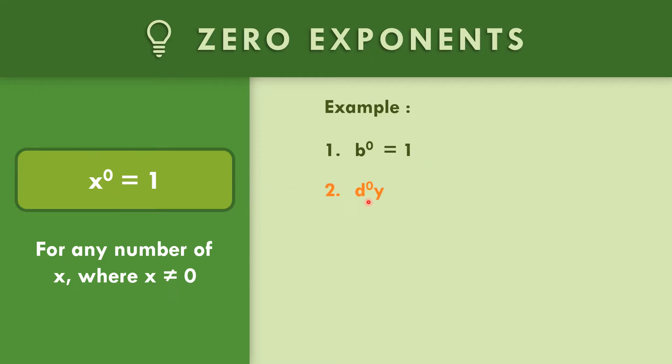How about number two: d to the zero times y. d to the zero equals one, copy y. One times y is equal to y.